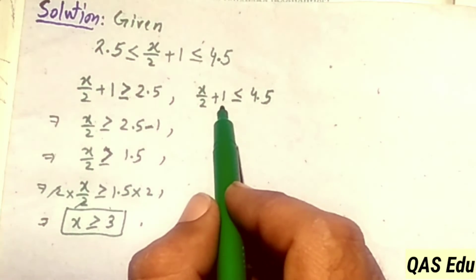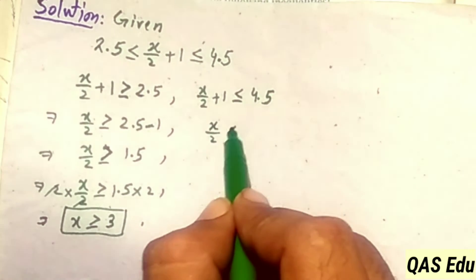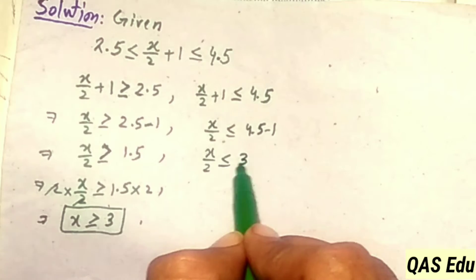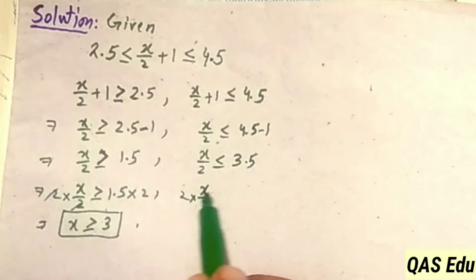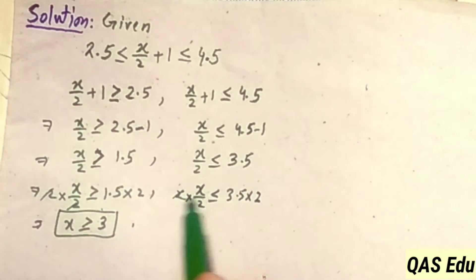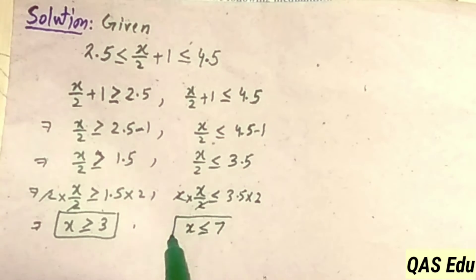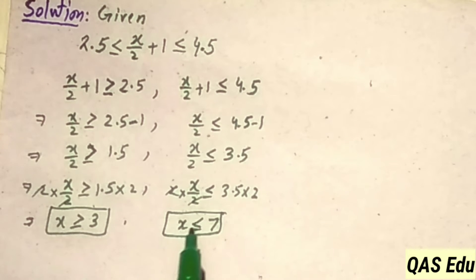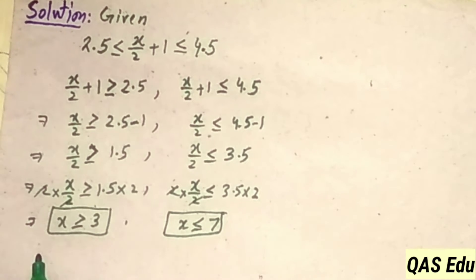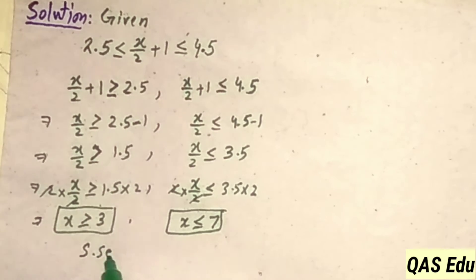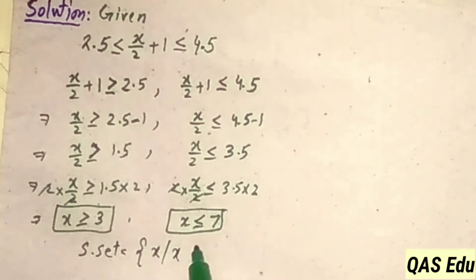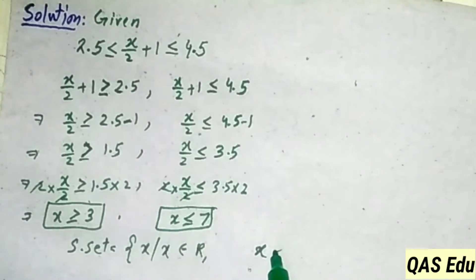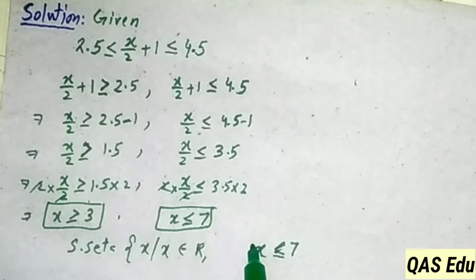For the second statement: x over 2 plus 1 is less than or equal to 4.5. Moving plus 1 to the right as minus 1, x over 2 is less than or equal to 3.5. Multiplying both sides by 2: 2 cancels, giving x is less than or equal to 7. So we have x is greater than or equal to 3 and x is less than or equal to 7.